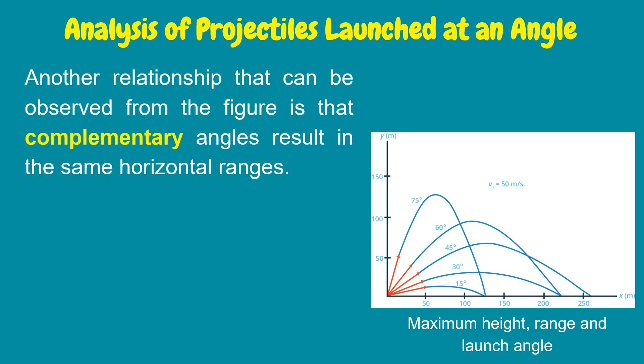Another relationship that can be observed from the figure is that complementary angles result in the same horizontal ranges. The range of a projectile fired at an elevation angle of 40 degrees will also be the same if it's fired at 50 degrees. The angles 40 degrees and 50 degrees are called complementary angles because they add up to 90 degrees. Other examples of complementary pairs are 30 and 60, 20 and 70 degrees.